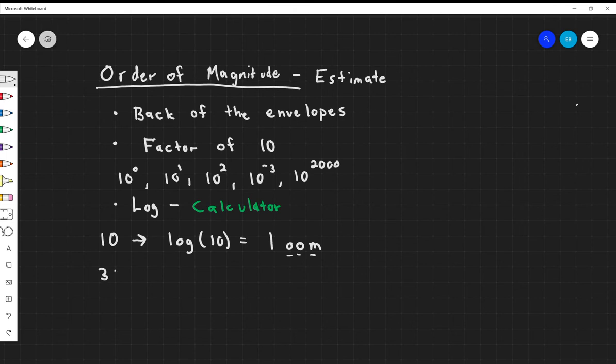What if I want the order of magnitude of the number 300? I can figure this out by typing log(300) into my calculator, and when I do this I'm going to get 2.48. I'm going to round this to 2, and that's going to be 2 orders of magnitude.